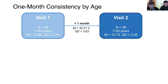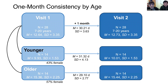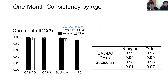To answer whether ICC measures differ across age, we divided our sample into younger and older participants and calculated ICC measures separately for each age group. All ICC measures are above our 0.85 cutoff. The confidence intervals overlap between age groups, meaning longitudinal consistency does not significantly differ between age groups.